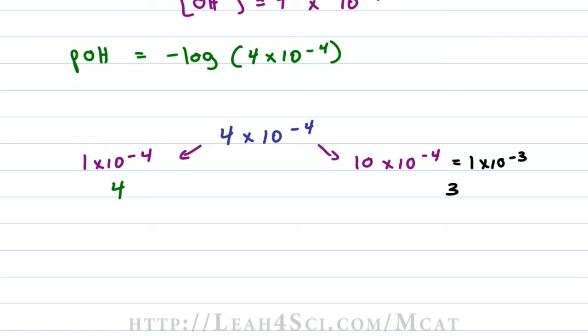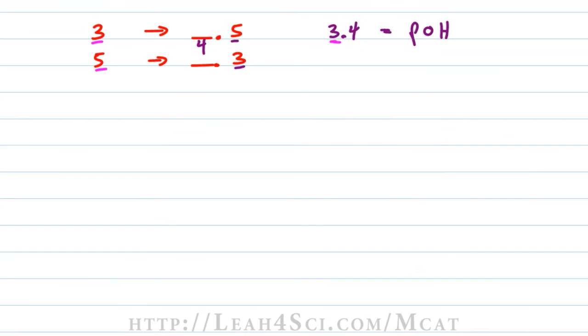If you want to take this a step further, you can think of the numbers you memorized for logs. If your number starts with a 3, you know that the negative log of that is gonna be 0.5. If the number starts with a 5, you know the negative log is going to be 0.3. Since we have a 4, the answer is going to be somewhere between 3 and 5. 4 is a perfect in between and we need something between 3 and 4. So 3.4 is going to equal to our pOH. 14 minus 3.4 equals our pH and that is equal to 10.6.